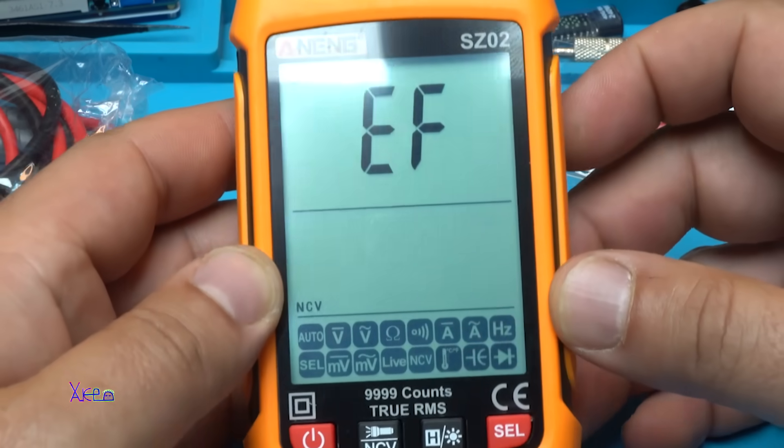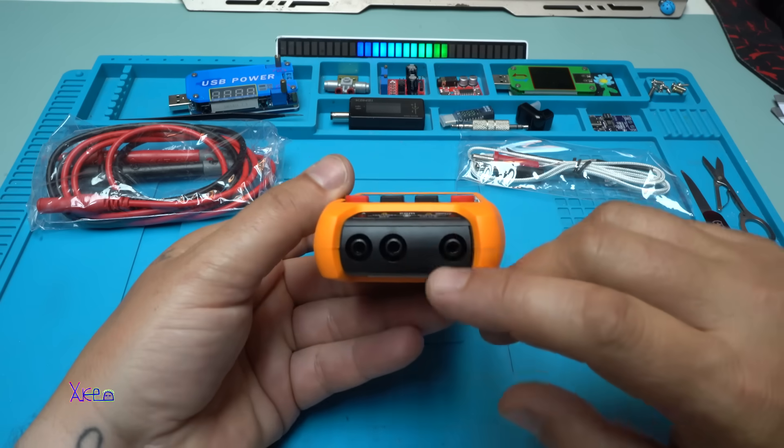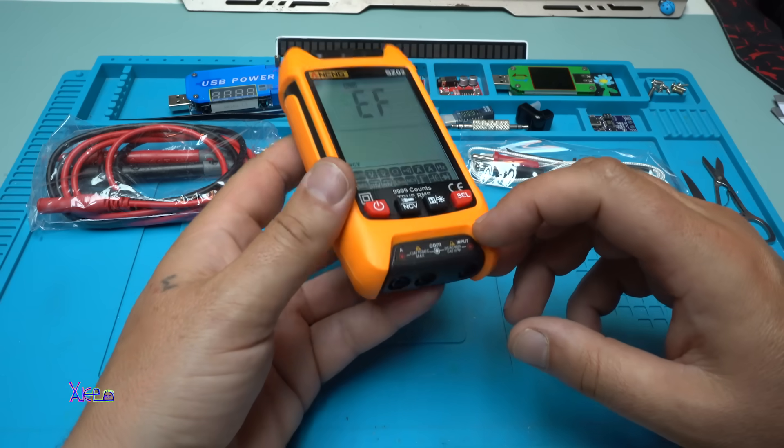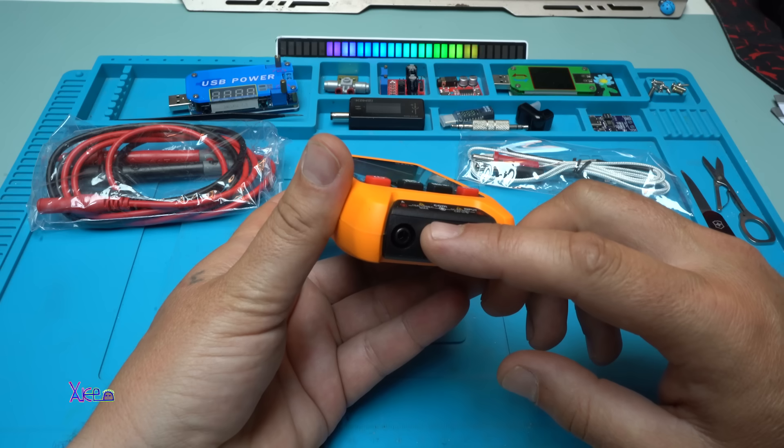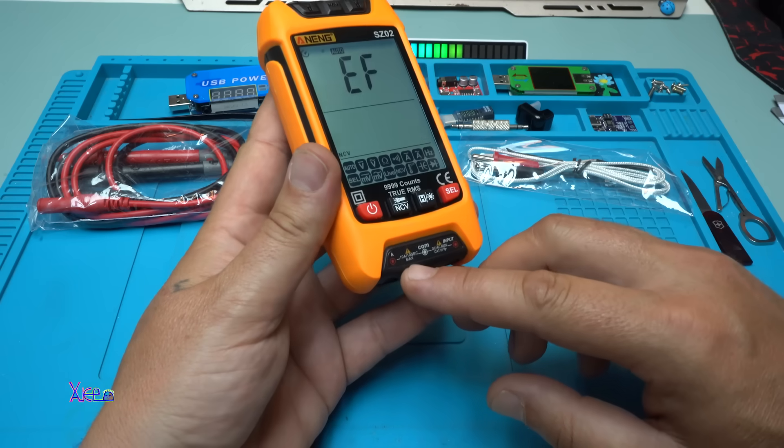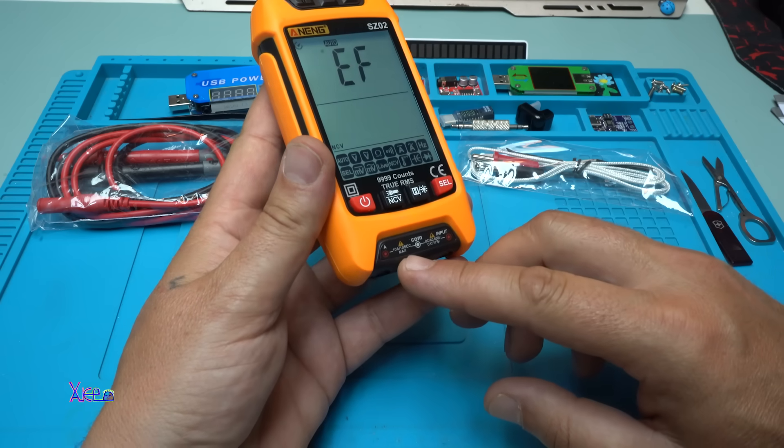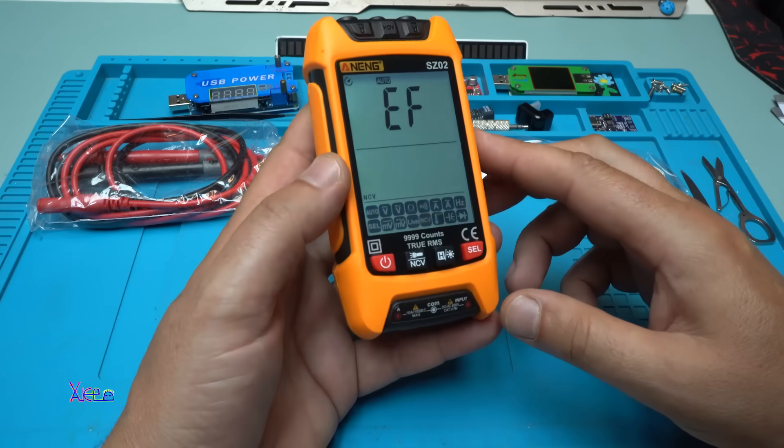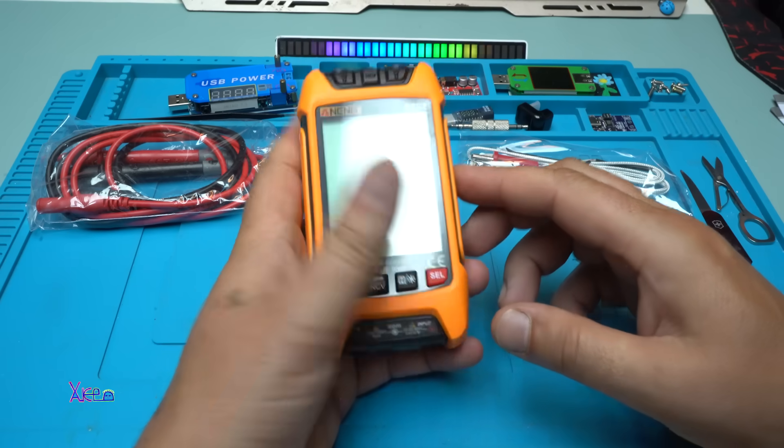Let's test this unit right now. Not to forget that this multimeter also measures current with 10 Amperes maximum. It has 10 Amperes 10 seconds maximum to prevent damage to this unit.